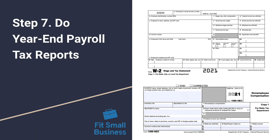Step 7: completing your year-end payroll tax reports. For employees, it's going to be the W-2, and for independent contractors, the 1099. Both forms report total earnings paid throughout the year, and the W-2 also includes taxes paid — which won't be included in the 1099 since taxes aren't deducted from contractors' pay. Both documents need to be in the hands of your employees and contractors by January 31st of the following year. If you use payroll software, filing these documents is often included or available for an additional fee.